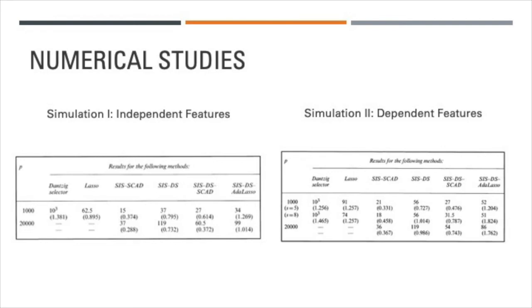For the second simulation, predictors are now correlated with each other. We considered three models where the first one had n equals 200, p equals 1000, and s equals 5. The second model has n equals 200, p equals 1000, and s equals 8 as its parameter space, and the third model had n equals 800, p equals 20,000, and s equals 14.